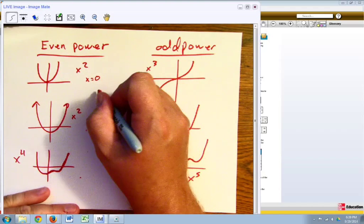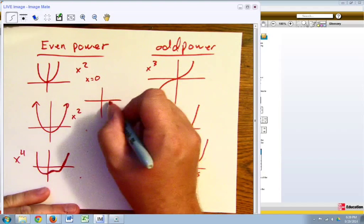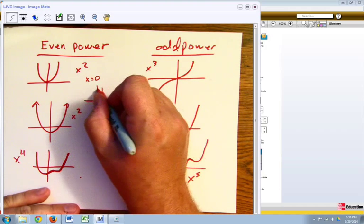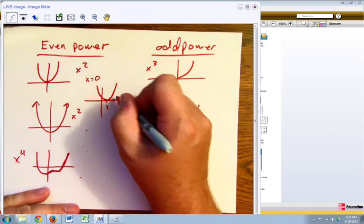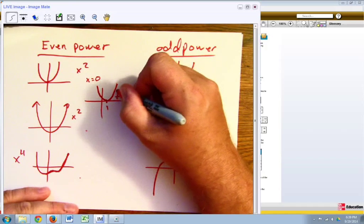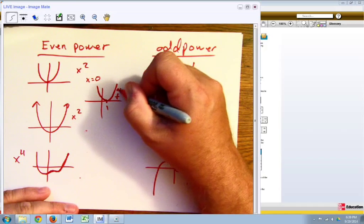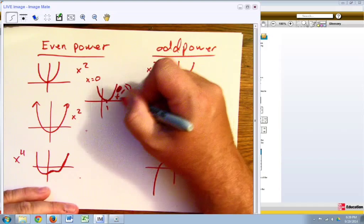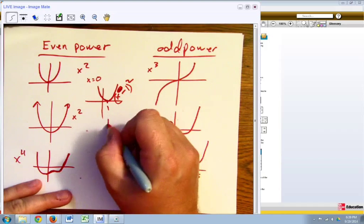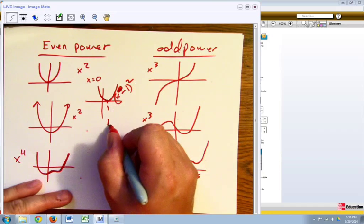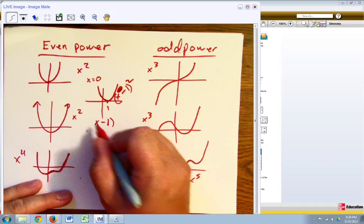Now if I were to take something of the following, if I said this one where it just comes down and touches at 1, the equation for this would be x minus 1 squared.